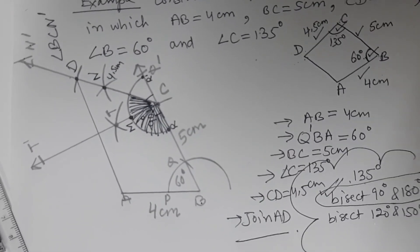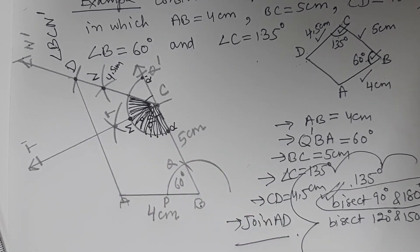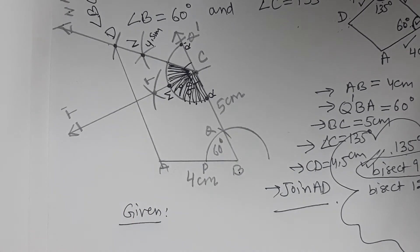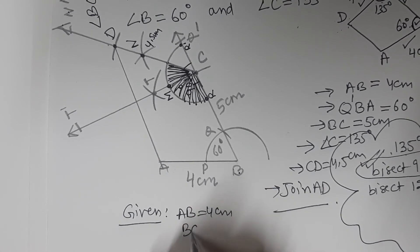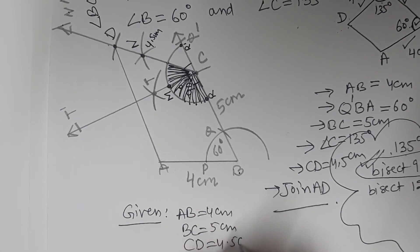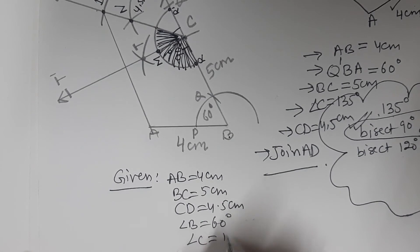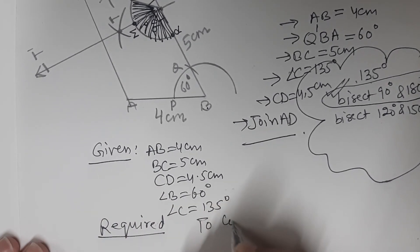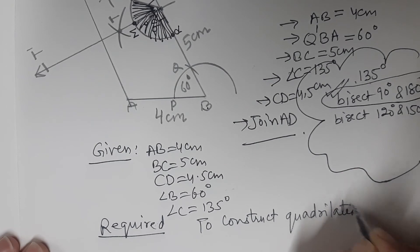This is the basic process for constructing the quadrilateral. In the examination, first write down what is given: AB = 4 cm, BC = 5 cm, CD = 4.5 cm, angle B = 60 degrees, angle C = 135 degrees. Then write down what is required: to construct quadrilateral ABCD of the given dimensions.